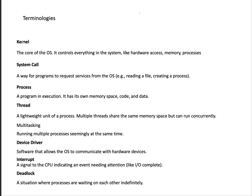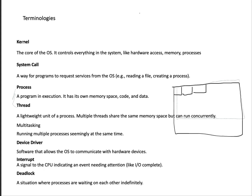Inside a process we have something called a thread. A thread is a lightweight unit of a process. For example, when we open a web browser like Google Chrome or Firefox — which is an application program — you can perform many tasks: you can add new tabs. In one tab you're watching YouTube, in another you're watching a movie, in another you're chatting with ChatGPT. Each of those tabs represents a thread — lightweight units of process that come together to form the overall process.